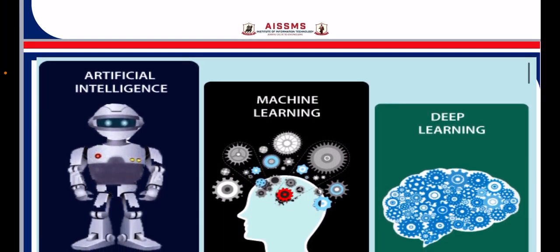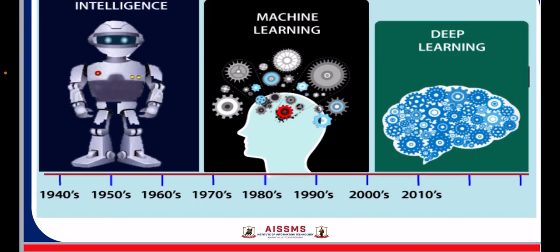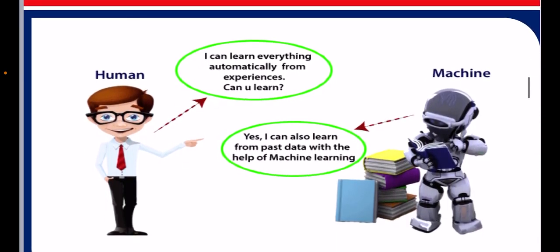Before we go into machine learning, we should have the basics of AI, which we have covered. A human asked a machine: can you learn everything automatically from experience? The machine says yes — I can also learn from past data with the help of machine learning.